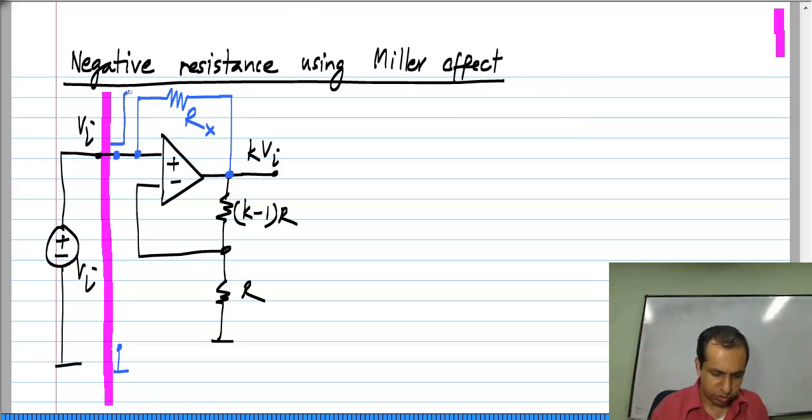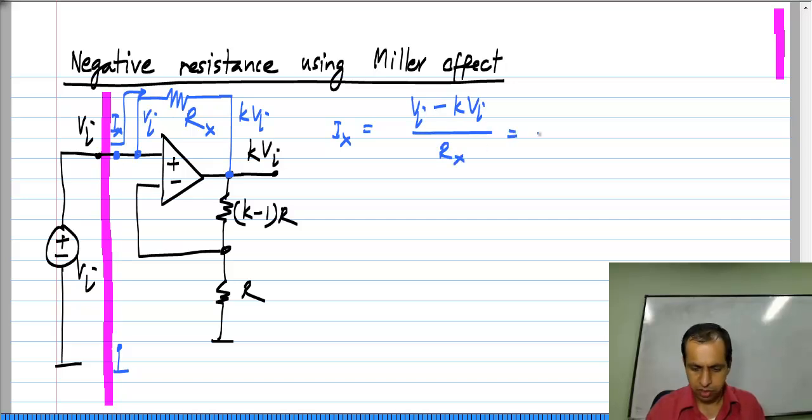The only current here is flowing through R x. This node is at V i, this node is at K V i. So this current I x is V i minus K V i divided by R x, which is V i times 1 minus K divided by R x.